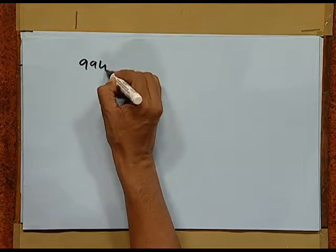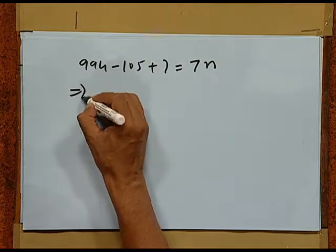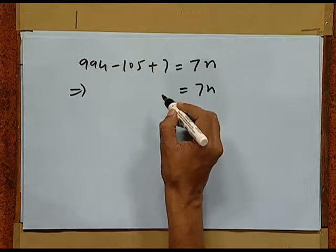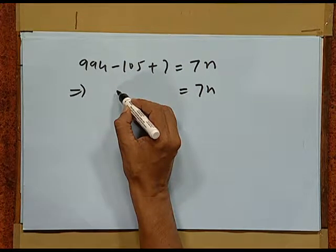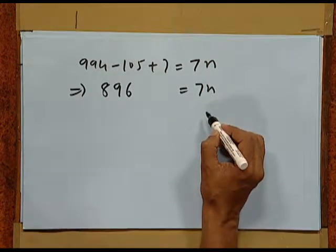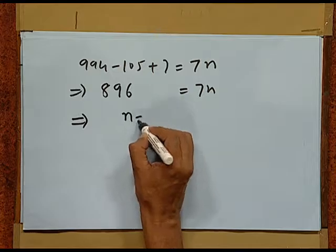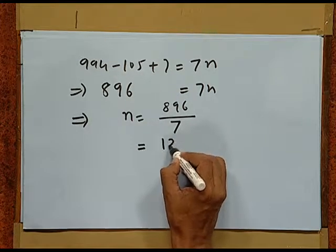We have 994 minus 105 plus 7 equals 7n. That gives 7n equal to 994 minus 105, which implies n equals 896 upon 7, which makes it 128. So, we got the value of n equal to 128. This means that there are exactly 128 numbers between 100 and 1000 which are multiples of 7.